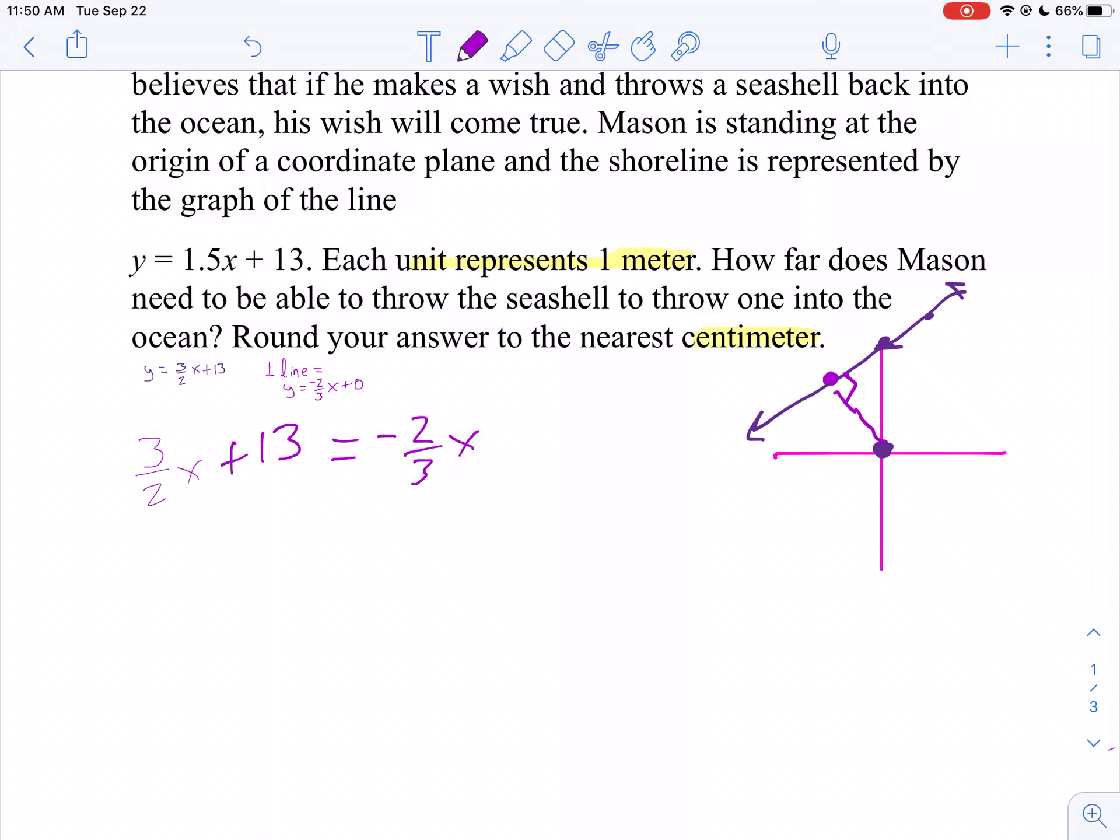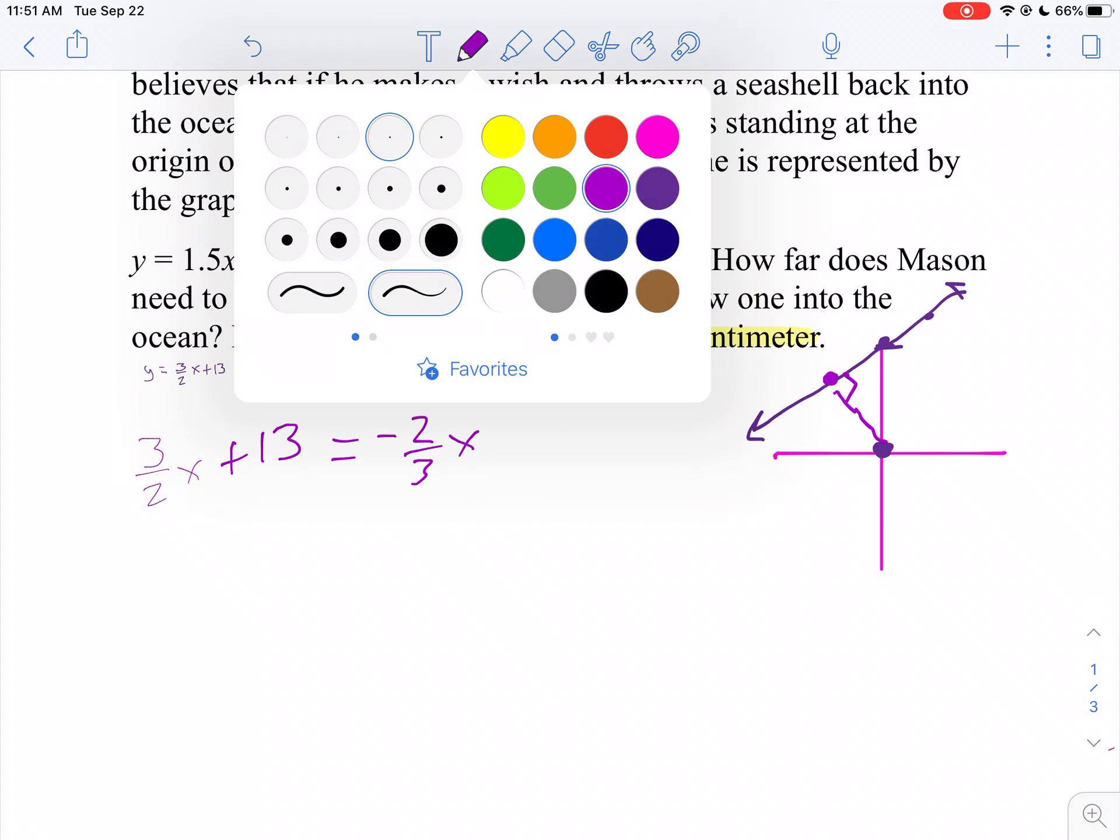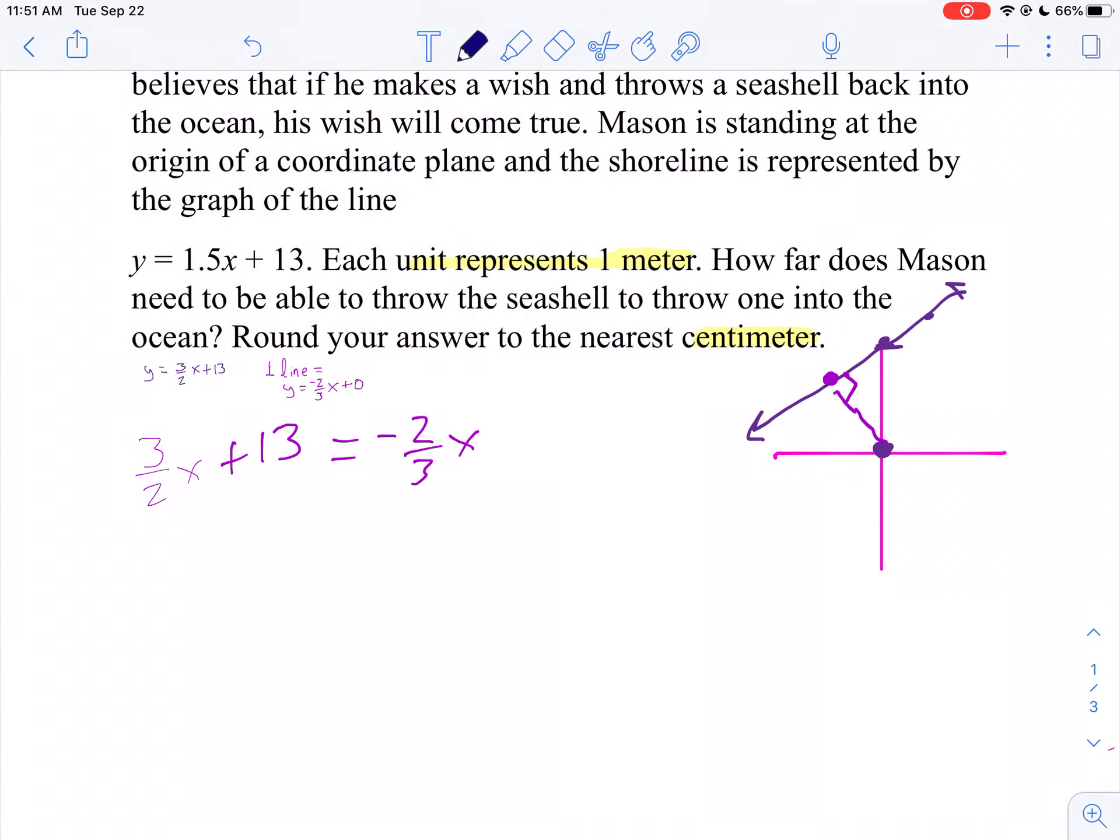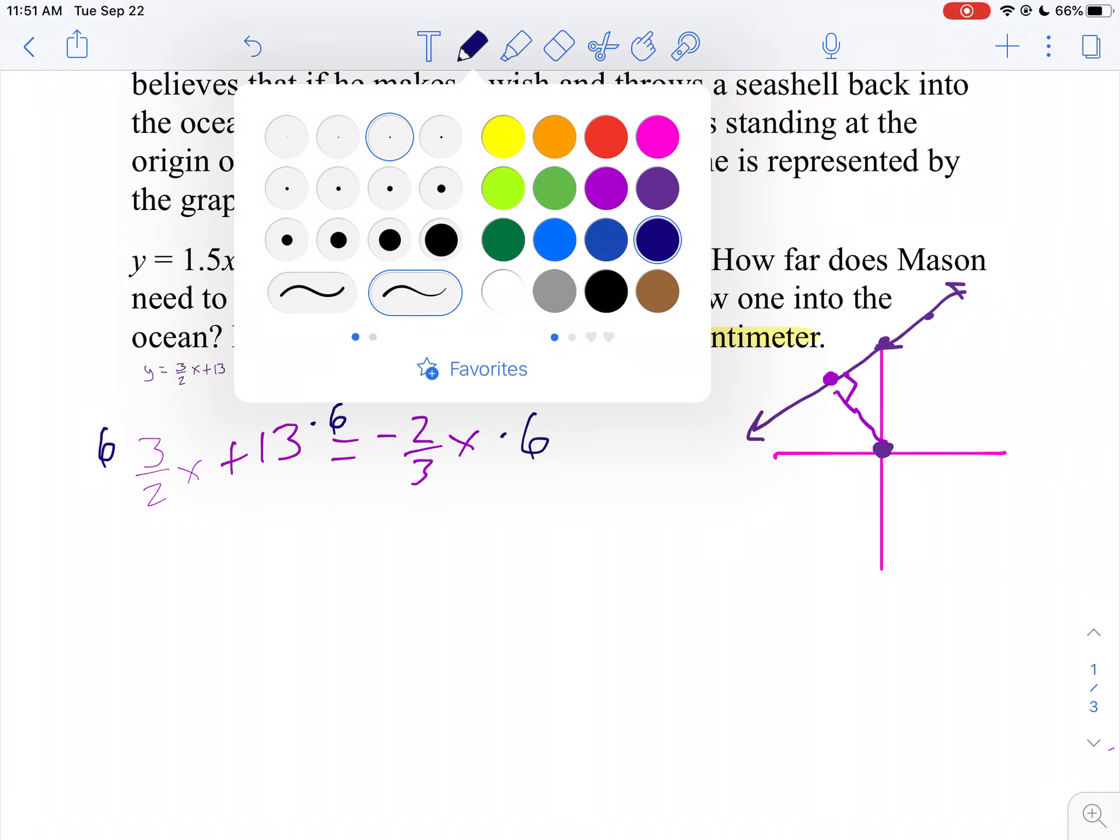I want to solve for x. I don't like fractions, especially with different denominators. Let's get rid of all the fractions. Common denominator of 2 and 3 is 6. So what we're going to do is multiply each term by 6. That'll get rid of our fractions. Now make sure you actually get rid of the fractions.